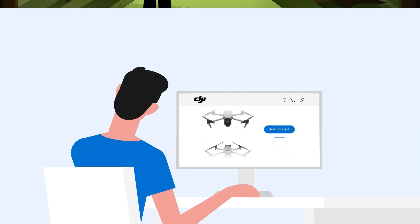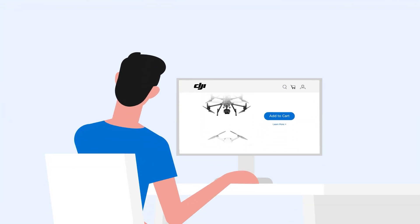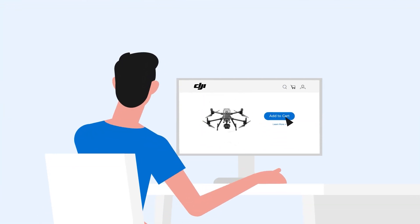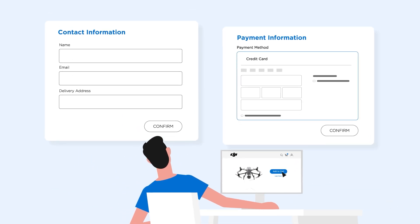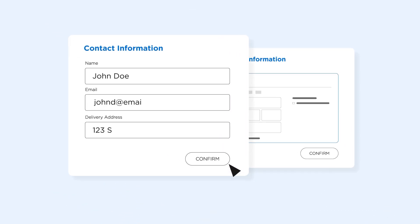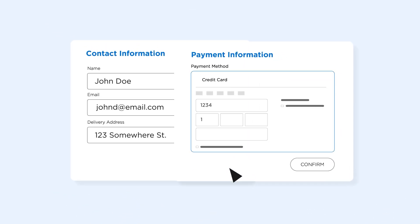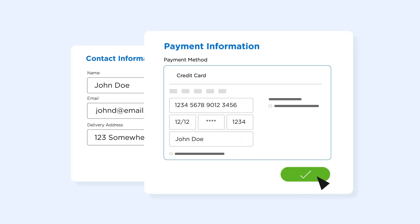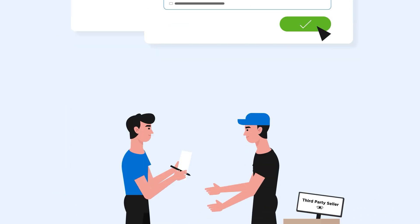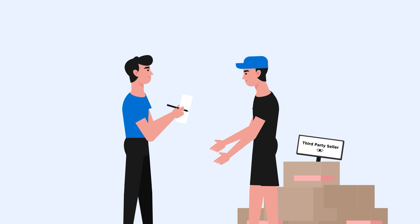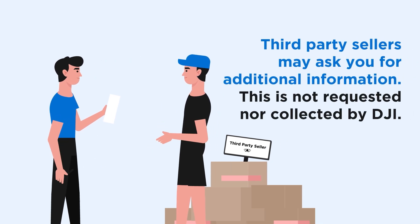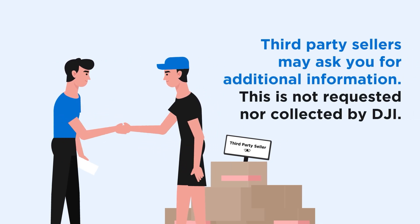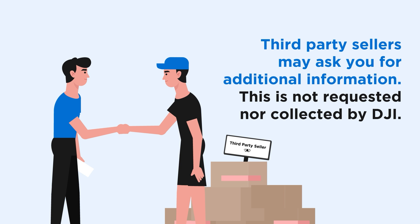When you buy a drone through the DJI store, two types of data are requested: your contact information and your payment information. If you purchase through a third party, they may ask you for additional information, but this is not requested nor collected by DJI.